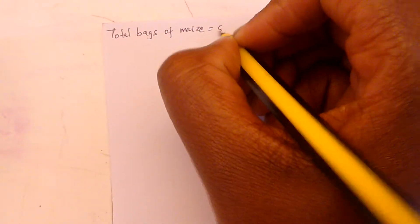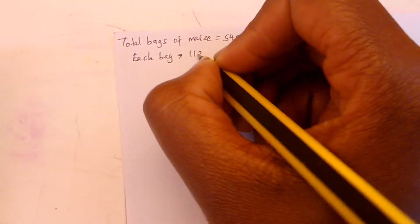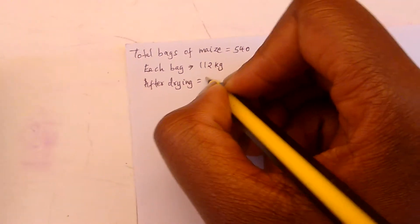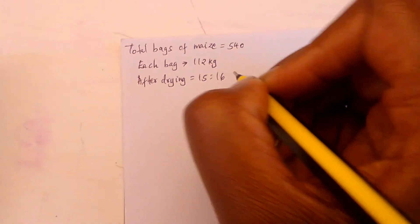From the narrative we know that the total bags of maize were 540, and each bag has a mass of 112 kilograms. After drying, there was a mass lost in the ratio of 15:16.